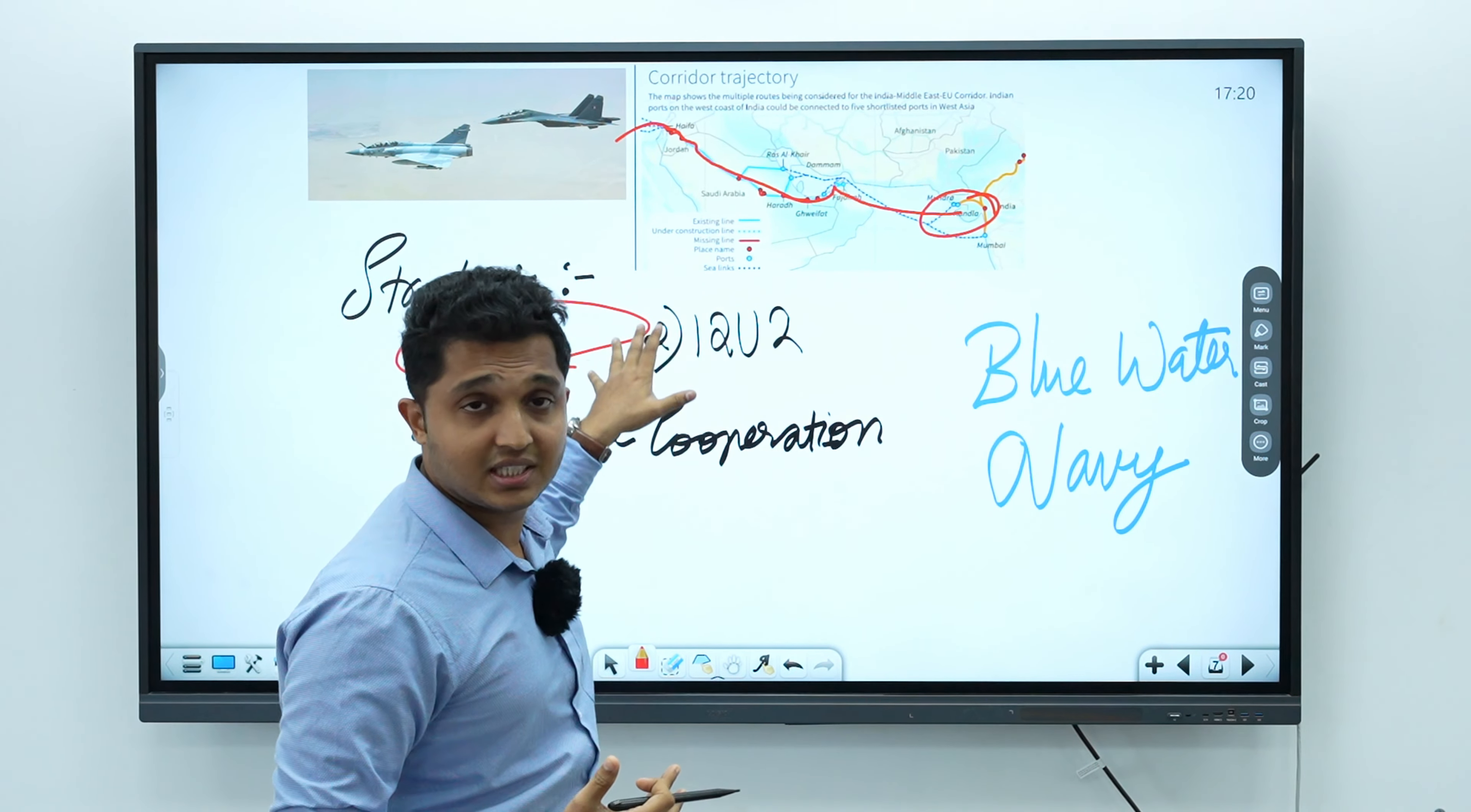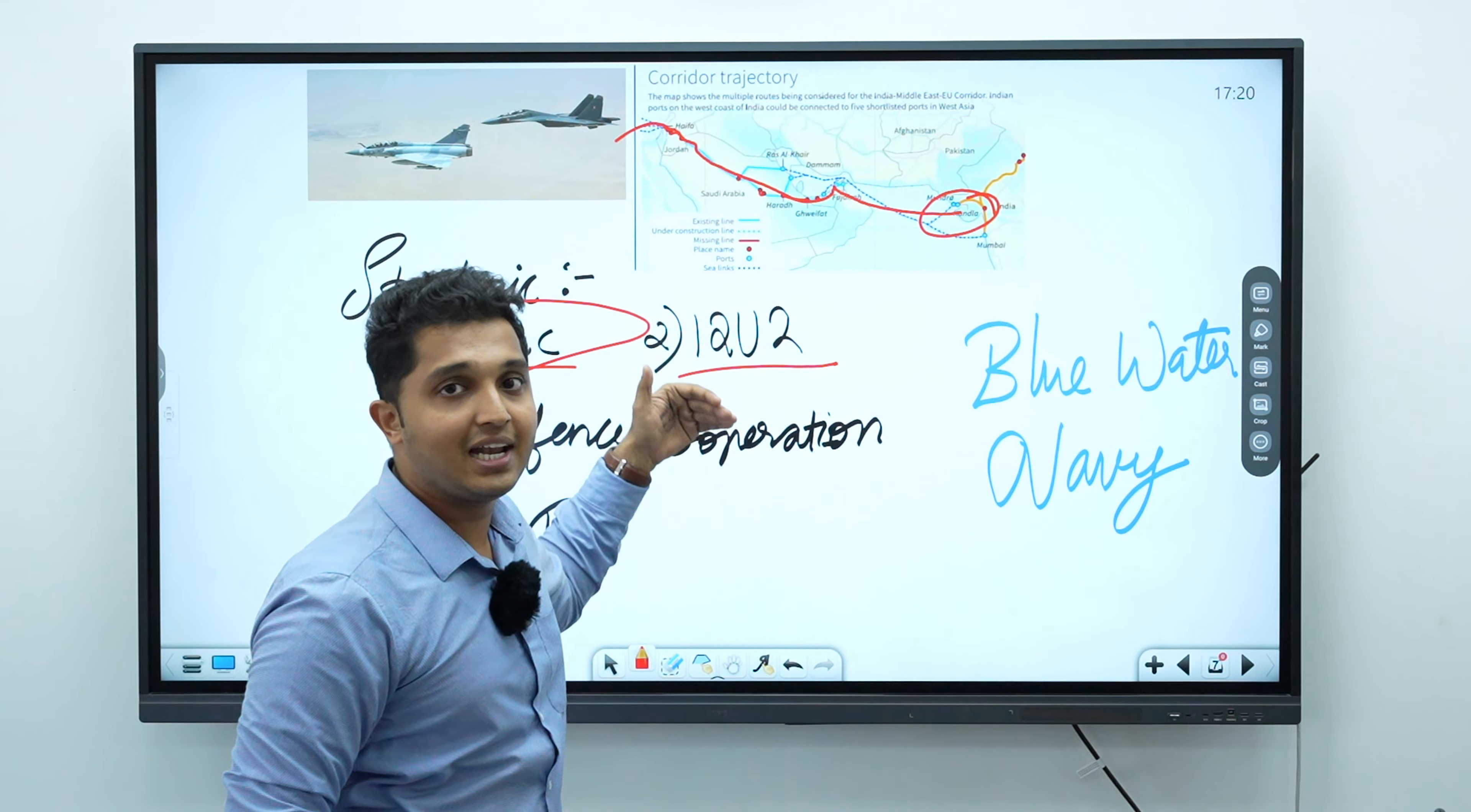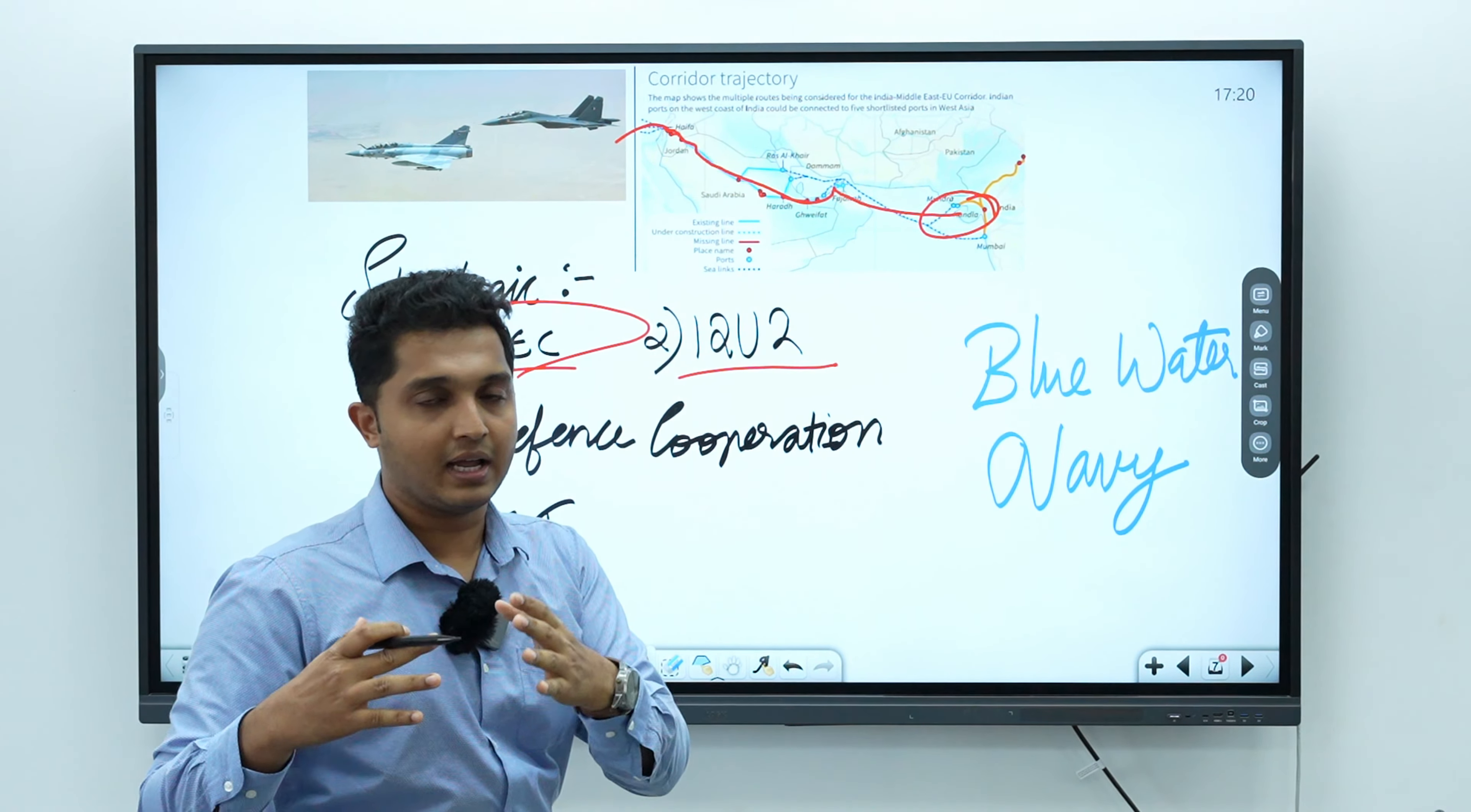Secondly, we have I2U2, which is India, Israel, UAE, and United States alliance of these four countries, which is also being dubbed as Middle Eastern Quad.